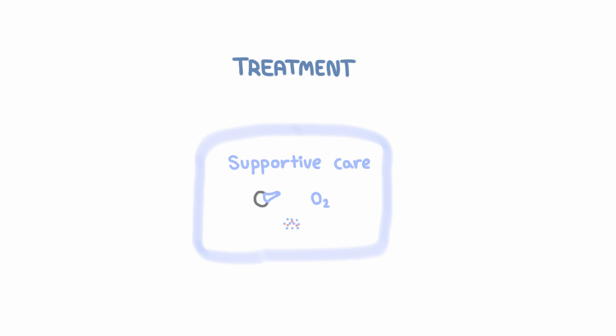There is an antiviral treatment active against RSV called ribavirin, and it's used for other viruses too. But the truth is it has not demonstrated any improvement in bronchiolitis in clinical trials. That's probably because by the time you have lower respiratory symptoms of RSV, most of the viral load is already cleared and the symptoms are actually because of the host response. The one situation where ribavirin can be considered is in immunosuppressed patients who are less able to effectively clear the virus.